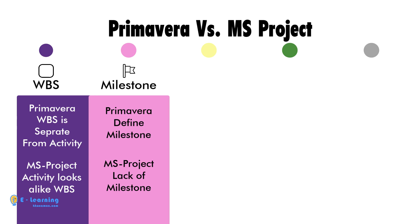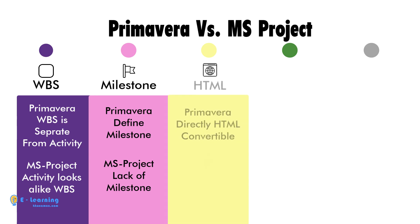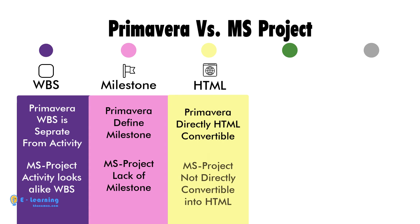You can directly convert any information into HTML in Primavera, whereas MS Project lacks this function.